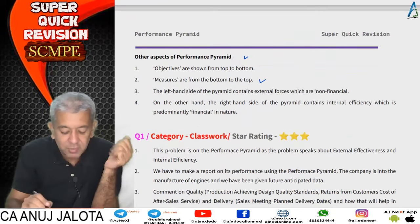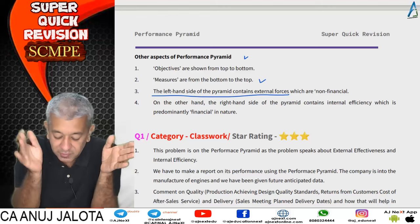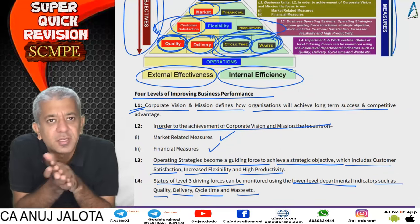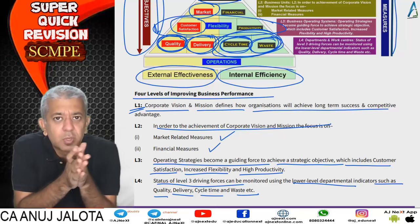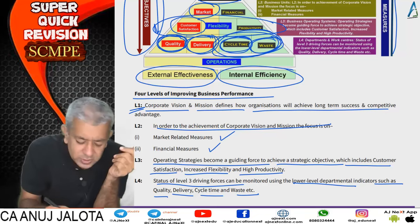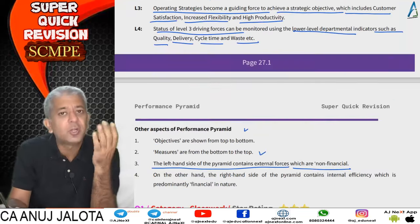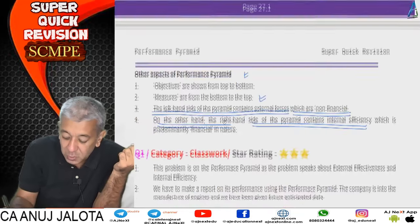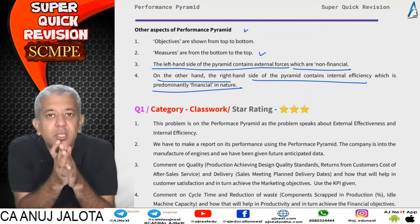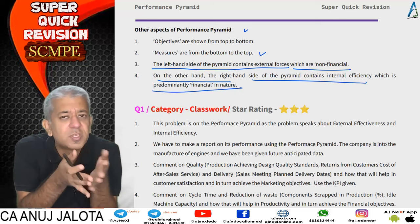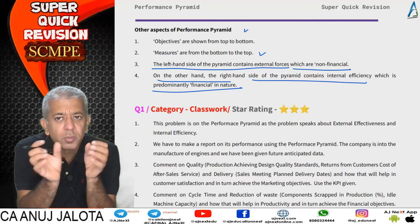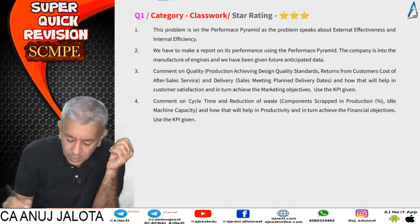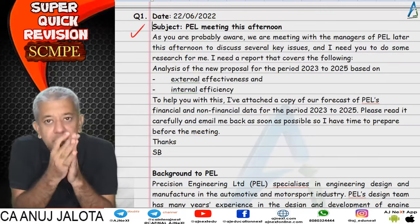The objectives flow from bottom to top. The left-hand side speaks about external factors, which are usually non-financial — quality and delivery, for example, are not reported in financial accounts. The right-hand side of the pyramid speaks about internal efficiency, which is predominantly financial in nature: waste and cycle time can be measured in monetary terms.